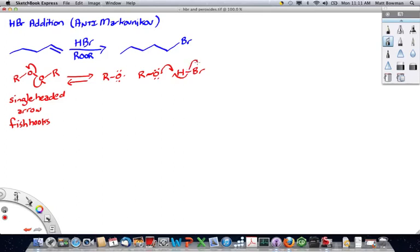and the other electron goes onto the bromine atom. And you generate a new species, a bromine radical.